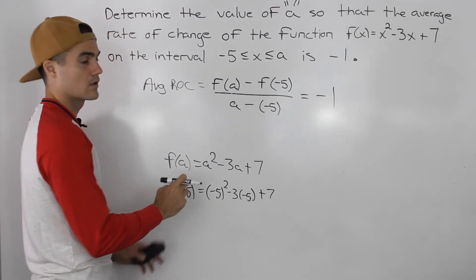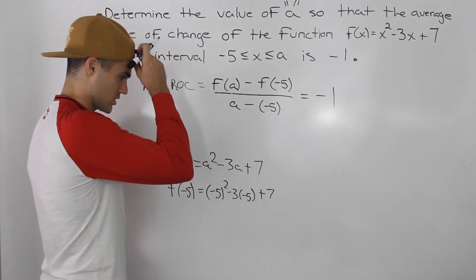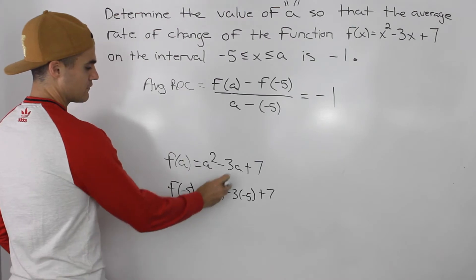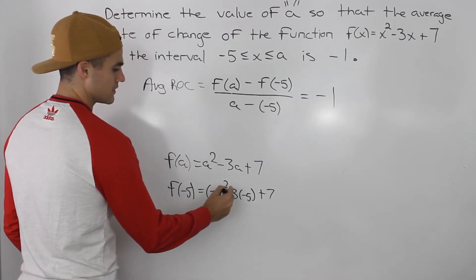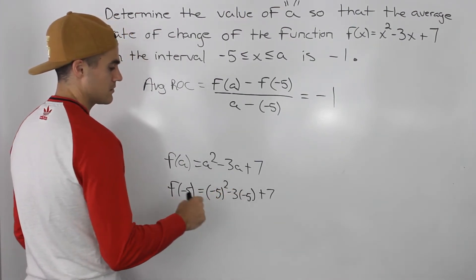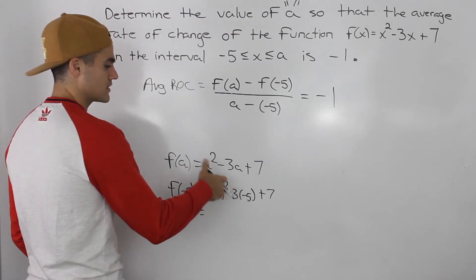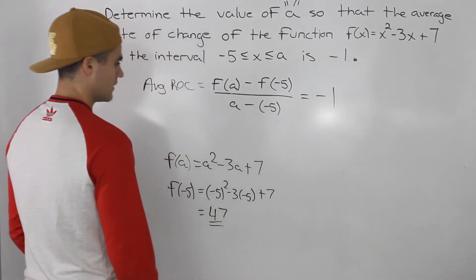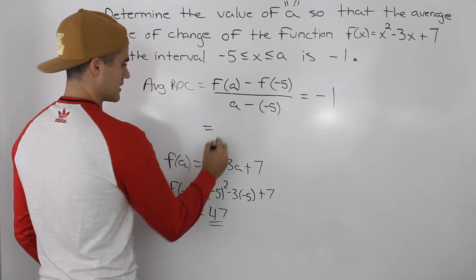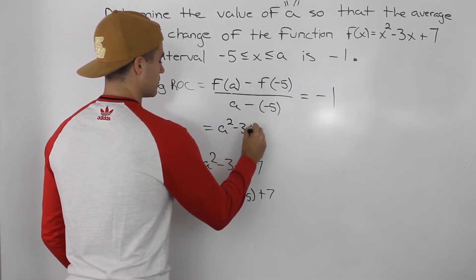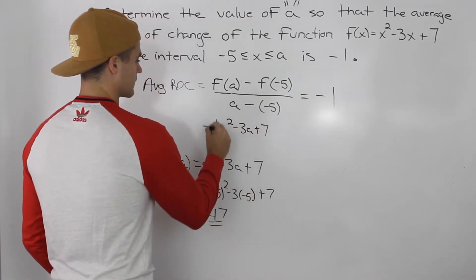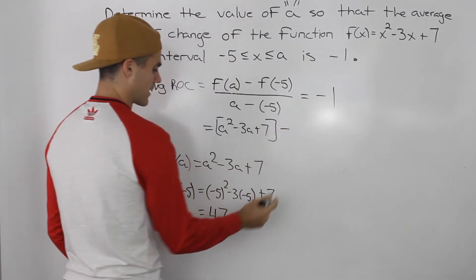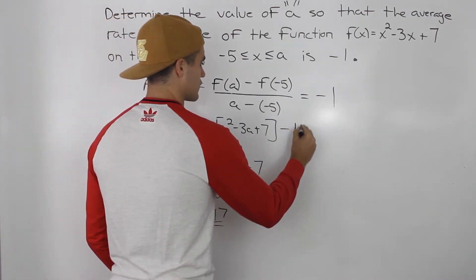Always put that number in brackets when computing f of any number, just to make sure you don't make a mistake in the algebra. So negative 5 squared is 25, and negative 3 times negative 5 is positive 15. So 25 plus 15 is 40, plus 7 is 47. So f(a) = a² - 3a + 7, and we're subtracting f(negative 5) which is 47.